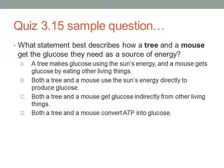What statement best describes how a tree and a mouse get the glucose they need as a source of energy? A: A tree makes glucose using the sun's energy, and a mouse gets glucose by eating other living things. B: Both a tree and a mouse use the sun's energy directly to produce glucose. C: Both a tree and a mouse get glucose indirectly from other living things. Or D: Both a tree and a mouse convert ATP into glucose.